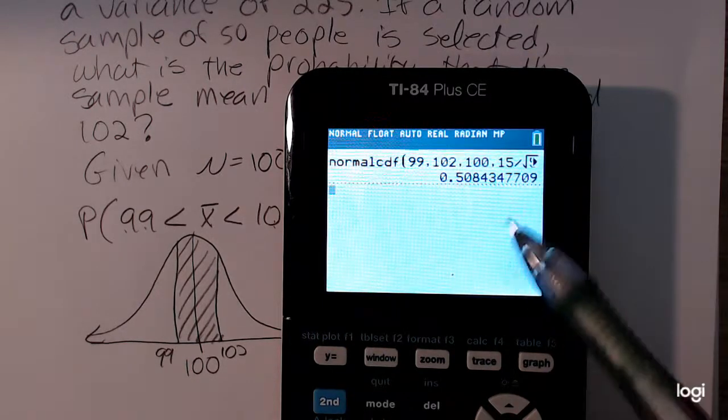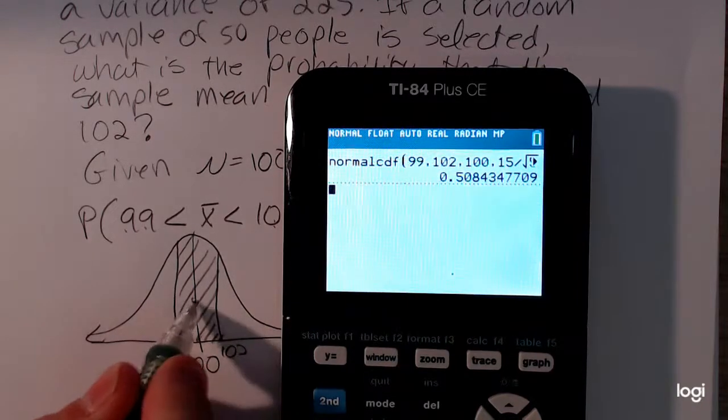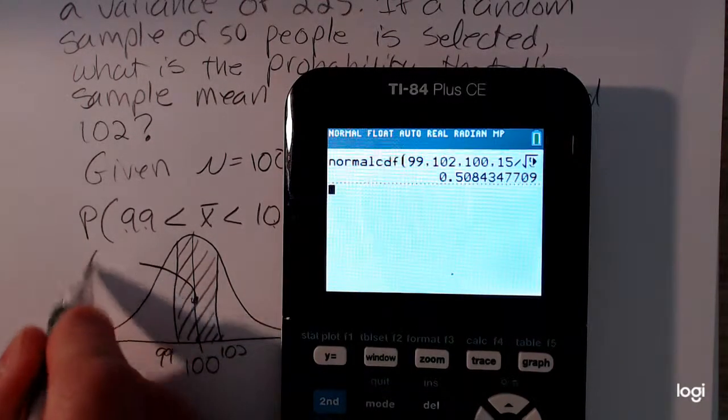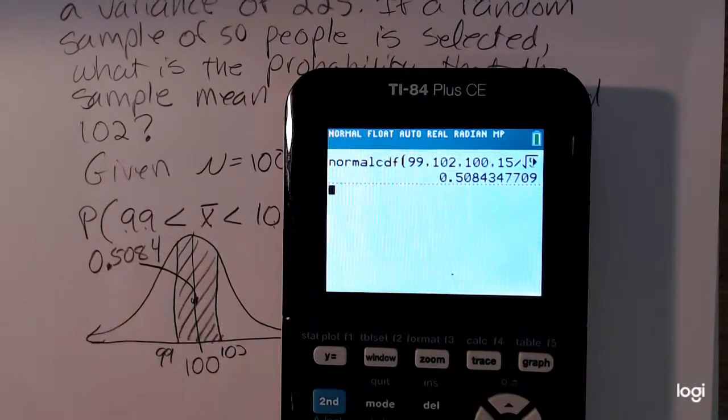And then enter. And that area, or probability, rounded to four decimal places, that's going to be .5084.